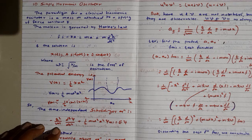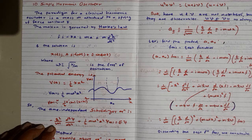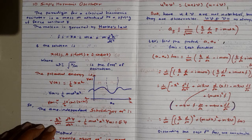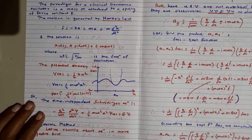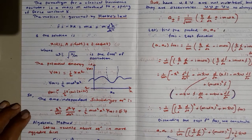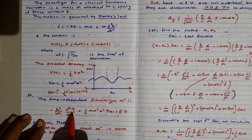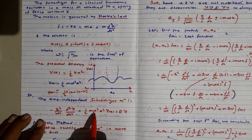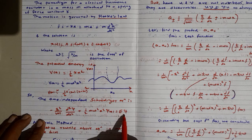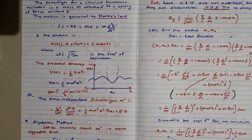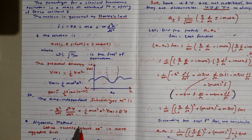Now starting with quantum mechanics, we will solve the time-independent Schrödinger equation, since we are dealing with a time-independent potential. The Schrödinger time-independent equation is: -ℏ²/2m · d²ψ/dx² + ½mω²x²ψ(x) = Eψ, where k = mω².